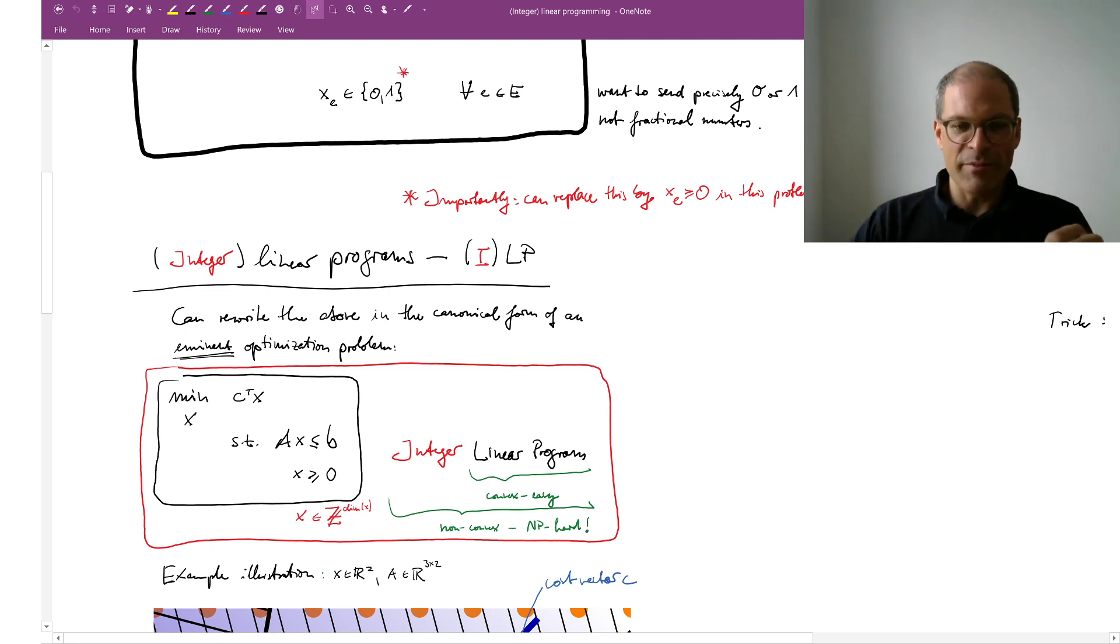You can glean a little bit of this importance from the fact that when, I think in 1971, a Soviet mathematician came up with a technique to solve, where he could provably solve linear programs in polynomial time, this was considered a Sputnik moment of mathematics. It made it to the New York Times. When does news about an algorithm make it to the New York Times? Not very often.